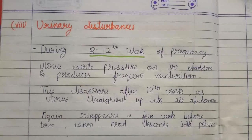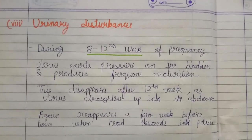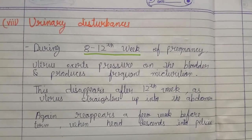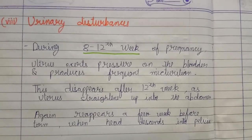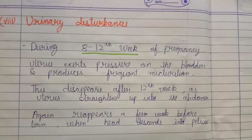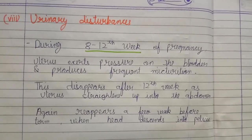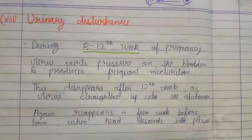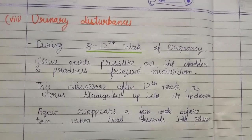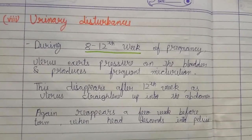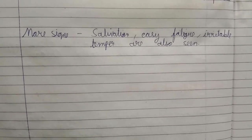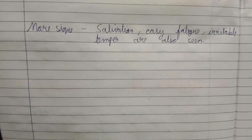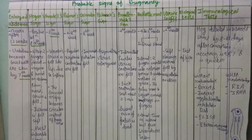The last presumptive sign is urinary disturbance. During the 8th to 12th week of pregnancy, the uterus exerts pressure on the bladder and produces frequent urination. This disappears after the 12th week as the uterus rises into the abdomen, and again reappears a few weeks before term when the head descends into the pelvis. Salivation, easy fatigue, and irritable temper are also seen.